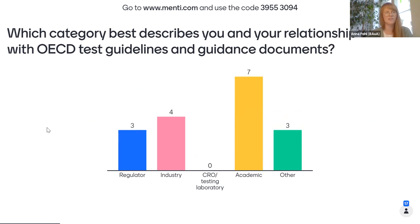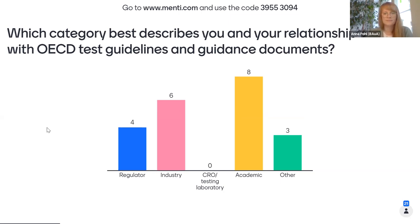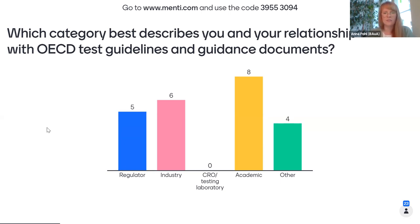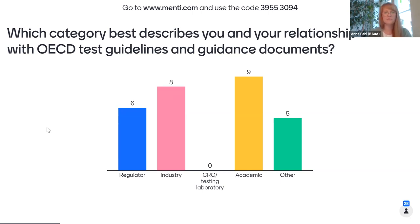I see a lot of answers appearing. If somebody has any problems with the Mentimeter, just write in the chat so we can help you out. So we're now at 21 answers — a little bit more would be nice. Let's see if we have somebody from the CROs in our audience today. So far it's mainly academic, industry, regulators, and others. The link is at the top and there's a direct link in the chat that you can click on to be part of the voting.